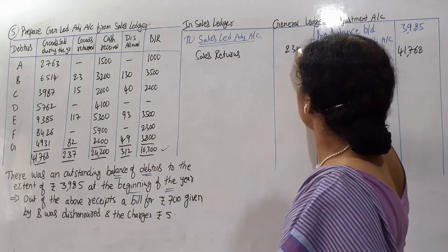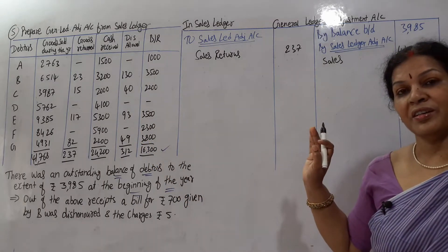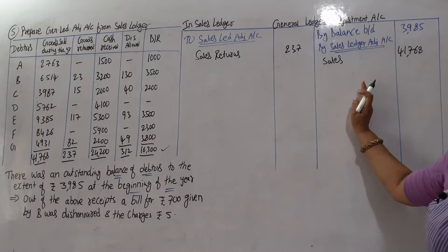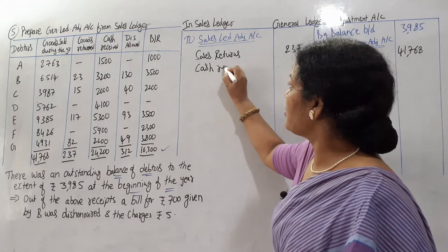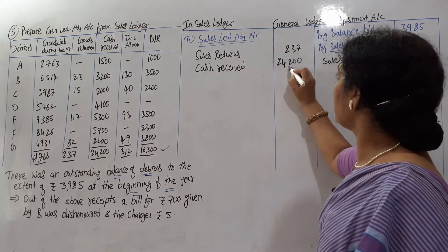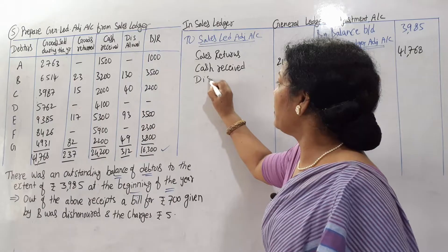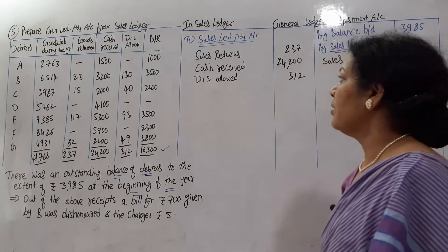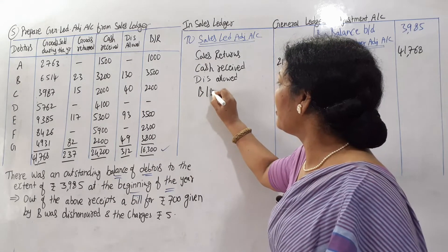Cash received: in the debtors ledger adjustment account it was on the credit side; here it comes on the debit side — 24,200. Discount allowed: there it was credit side; here debit side — 312 rupees. Bills receivable: there it was credit side; here debit side — 16,300.